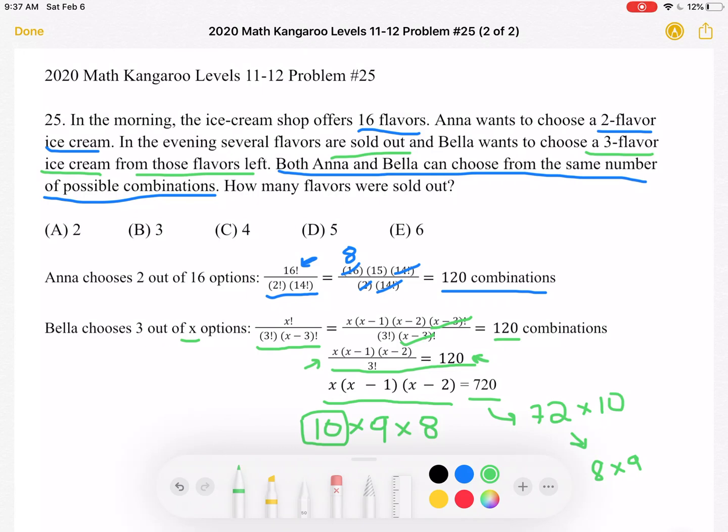Keep in mind that X represented the number of flavors that she had left to choose from. So if in the beginning there was a total of 16, and there's 10 left after some are sold out, we know that 16 minus 10, which is 6, 6 flavors must have been sold out, which is answer choice E.